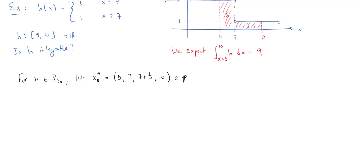This is a partition. We can see there's three commas—one, two, three—so this is a 3-partition of the interval [5,10].